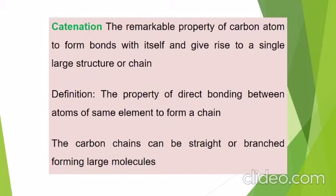Carbon shows tetra-covalency — as discussed earlier, carbon has a valency of 4. It is capable of bonding with 4 other atoms of carbon or atoms of some other monovalent element. Due to its small size, the nucleus of the carbon atom can hold its shared pair of electrons strongly. As a result, the bonds that carbon forms with most other elements such as hydrogen, oxygen, nitrogen, sulfur, and chlorine are very strong, making these compounds exceptionally stable. This further increases the number of carbon compounds.